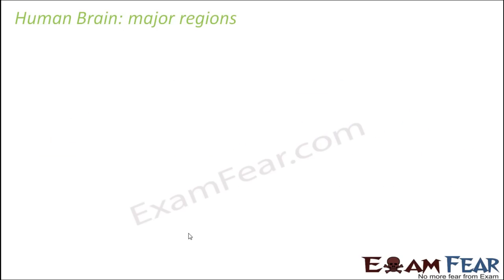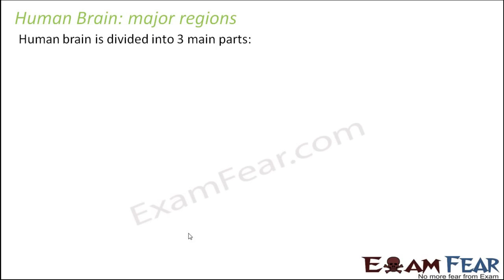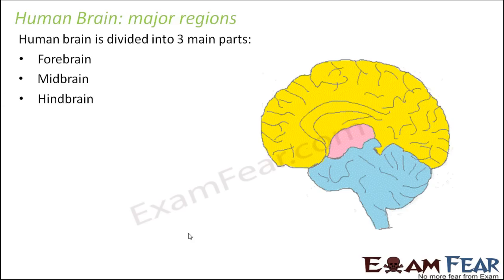Now we will talk about the major regions of the brain — the different parts and various regions. Overall, the human brain is divided into three main parts: the forebrain, the midbrain, and the hindbrain. These are the three major parts of the brain.